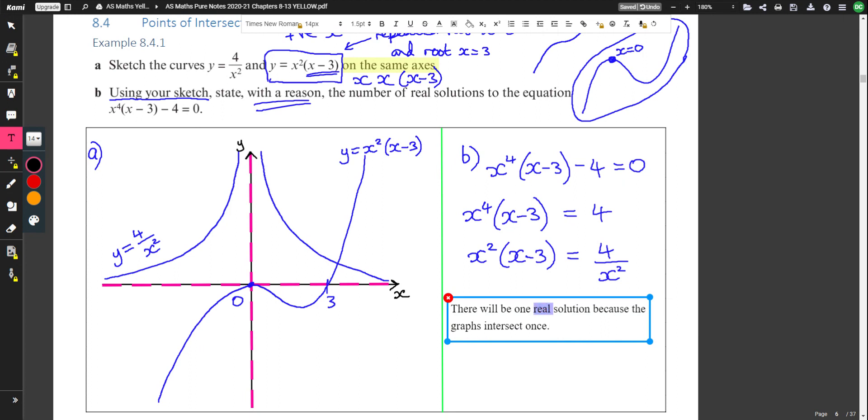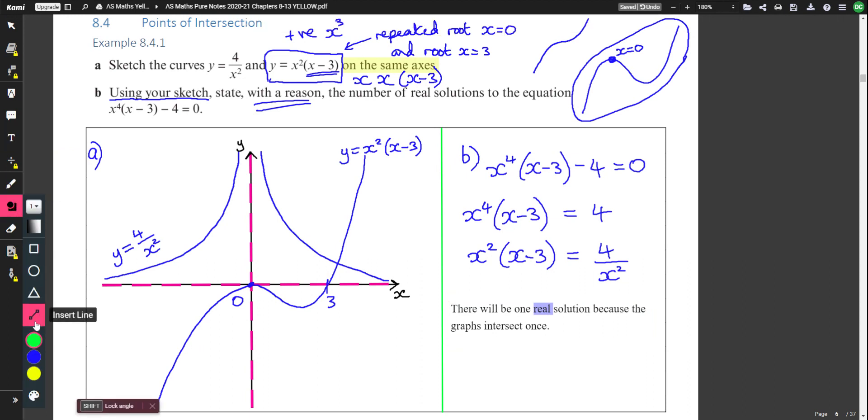I just want to briefly mention the word real there. Any number that you could put on a number line. So that's a thing that you possibly met at primary school, number lines. So 0 and then positive numbers on the right, negative numbers on the left.